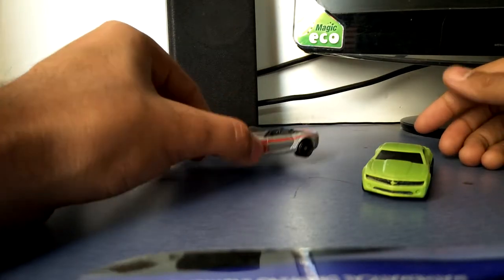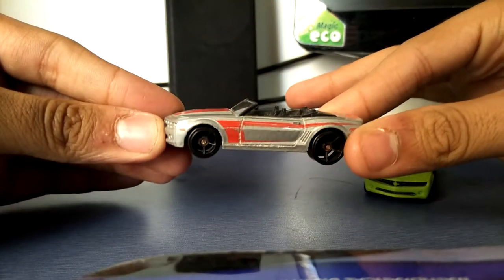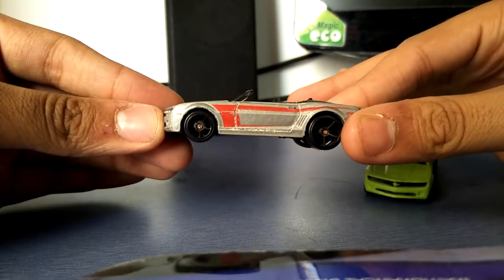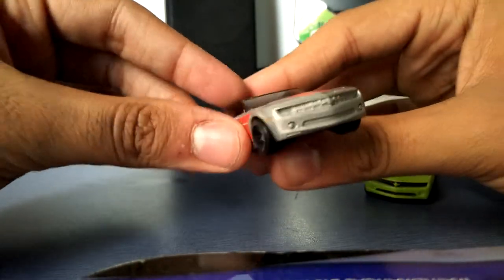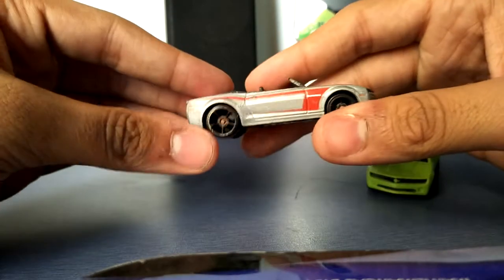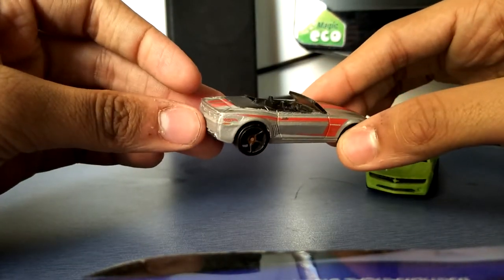This is the Chevrolet Camaro convertible. This one is a beauty. If you see, it's painted red and silver. Red and silver is a good color combination because it's really bold and nice.